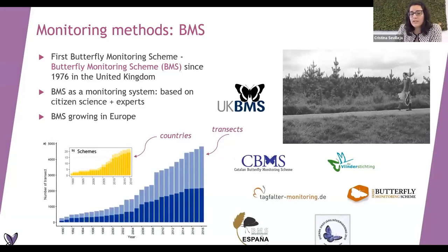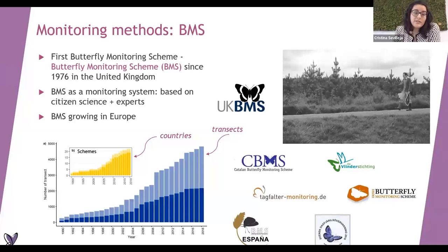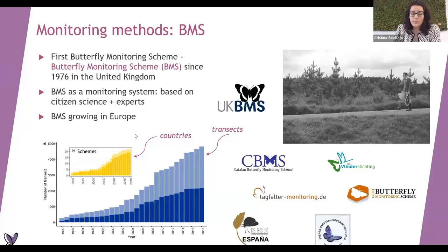In more countries like Germany, Spain, Netherlands, Ireland, and many others, the creation of these BMS and the number of transects started to grow. You can see on the graph in blue the number of transects since the 90s, how it has been growing, and the number of schemes as well growing a lot.